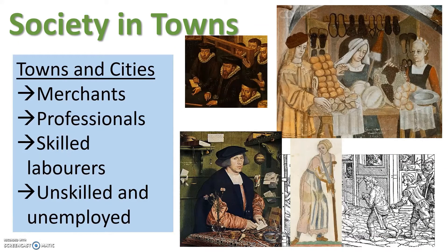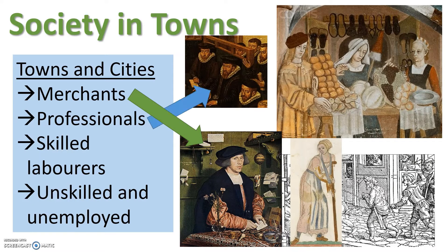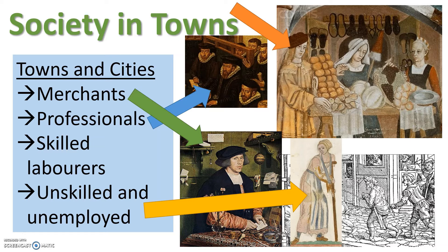Towns were very different, with only ten percent of the population living there. In towns in particular you would see the middle classes — people who weren't ridiculously rich like Elizabeth and her nobles, but were far from poor. This included merchants, professionals such as lawyers and doctors, and skilled labourers such as craftsmen. Towns also had many unskilled labourers as well as unemployed inhabitants.